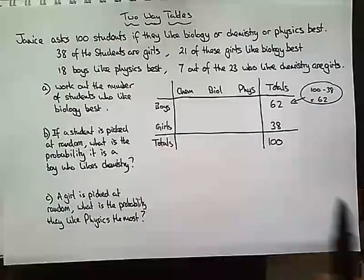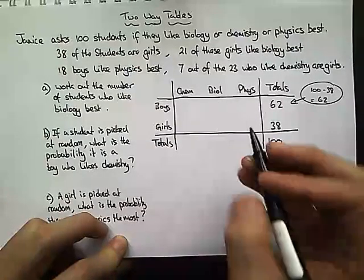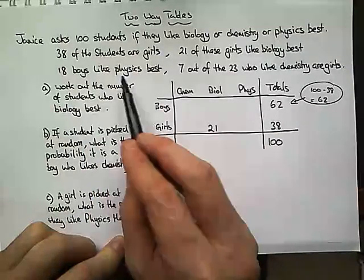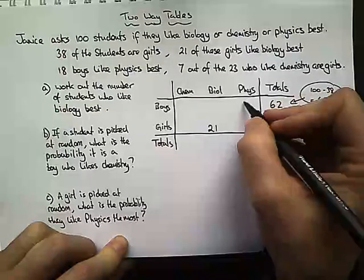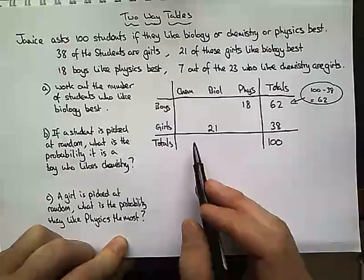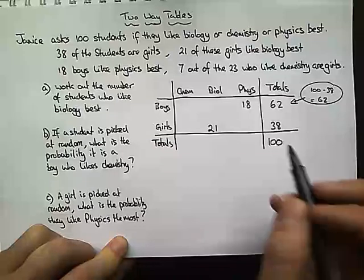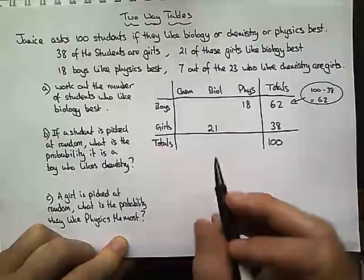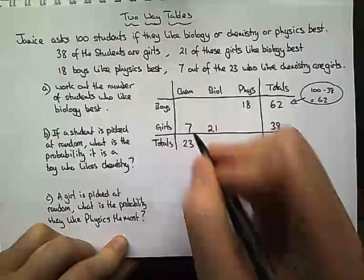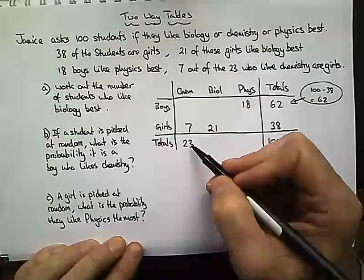21 of these girls like biology best, so biology-girls is 21. 18 boys like physics best, so boys-physics is 18. I can't work out anything else yet because I haven't got enough information. Then, 7 out of the 23 who like chemistry are girls, so we know 23 like chemistry and 7 of those are girls.